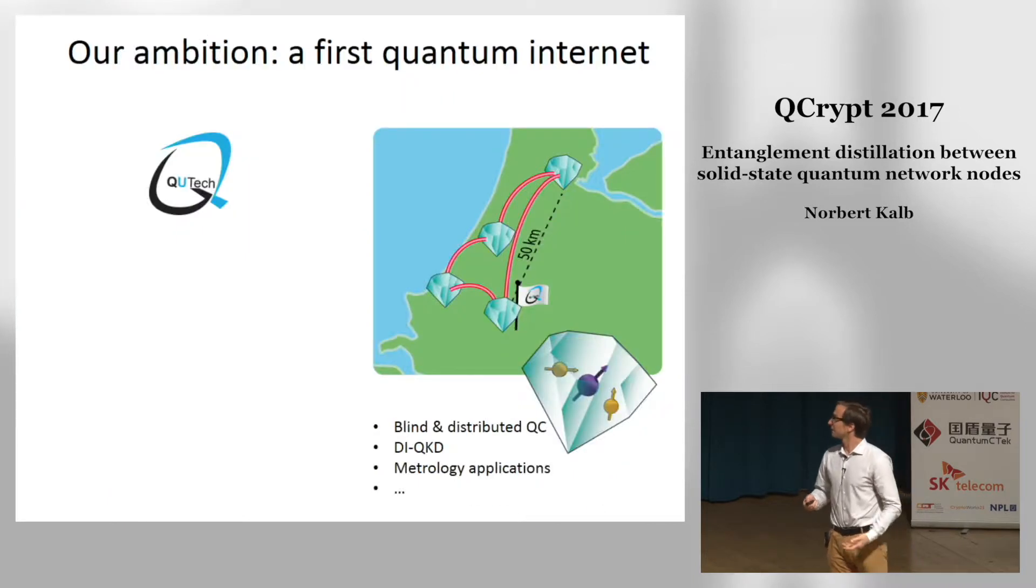I work in the Netherlands and what you see here is a schematic map and our ambition. We aim at QuTech in Delft to build a primer for a quantum internet that comprises four Dutch cities and spans macroscopic distances. On such a quantum network we will be able to do things like blind and distributed quantum computation, device independent key distribution, metrology applications, quantum repeaters, you name it.